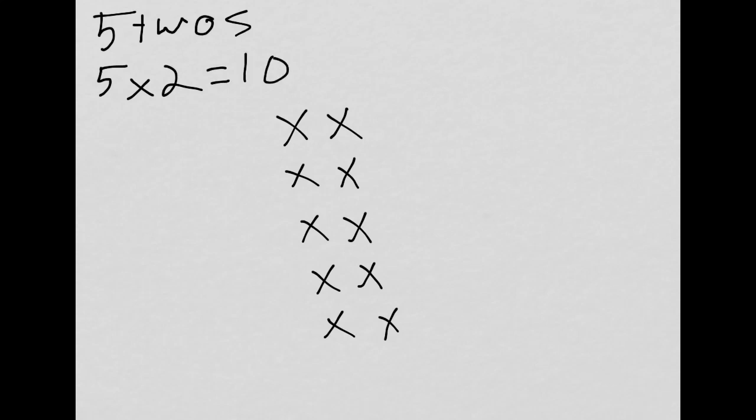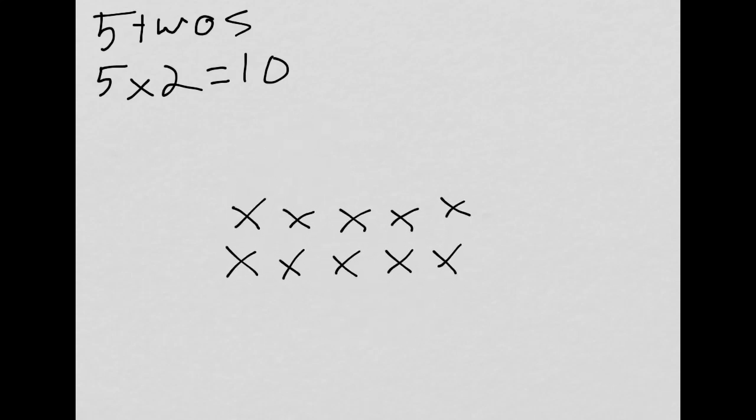Now what's going to happen if we rotate it? If I rotate it all the way to its side like this, we don't have five twos anymore. What do we have?